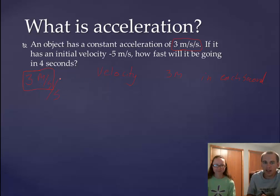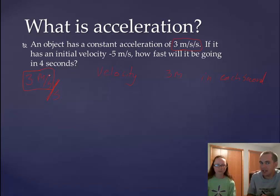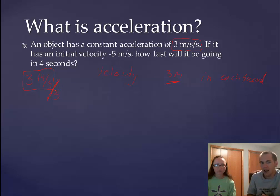Well, this takes that one step further. Instead of saying how far I'm moving in a second, it's telling me how much my speed changes in a second. A velocity tells me how much my position changes — it changes three meters each second. An acceleration tells me how much the velocity changes each second.